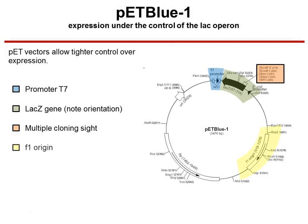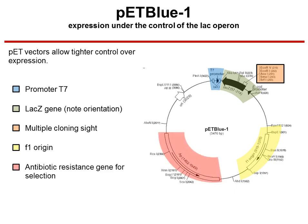We also have on here an F1 origin of replication that we can use to create single-stranded DNA. We have an ampicillin resistance gene that we can use to select only those bacterial cells that have taken up our plasmid. And we have an origin of replication — in this case, it's a low copy number origin of replication, which will maintain the plasmid within the cytosol of our bacterial cell.